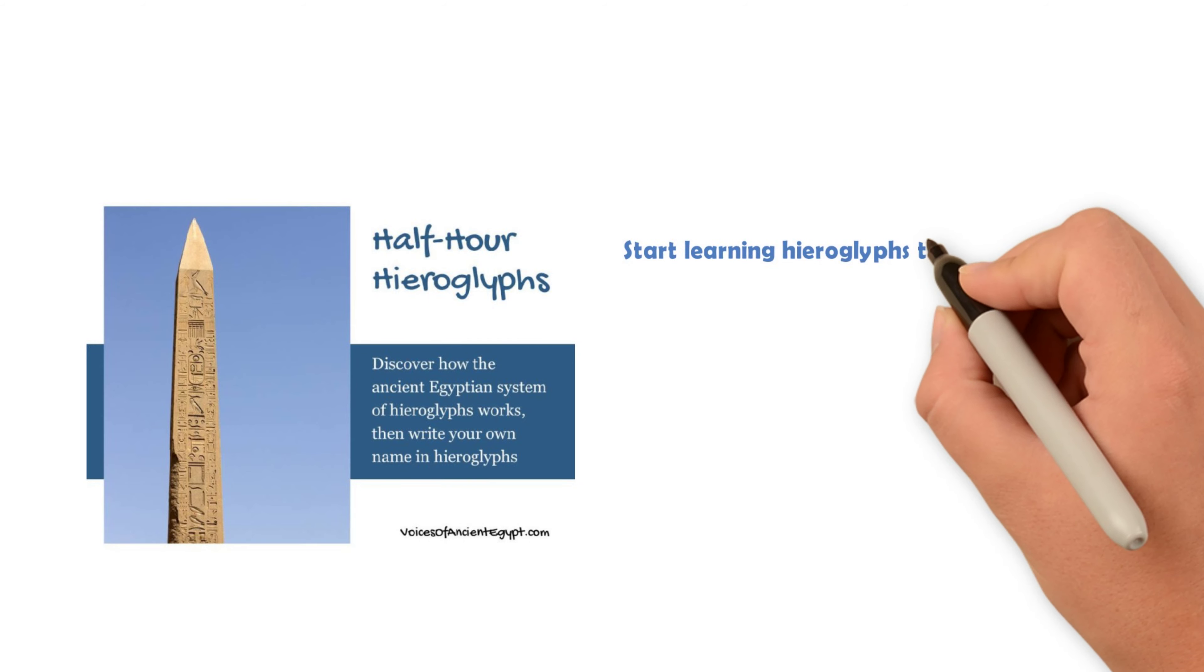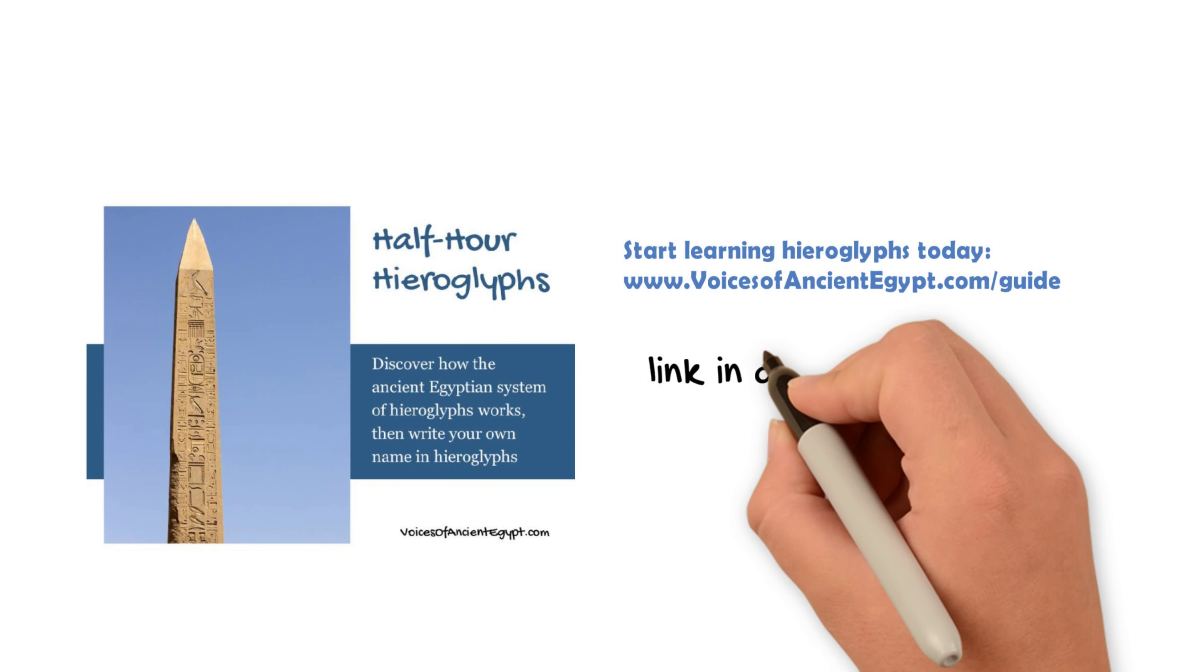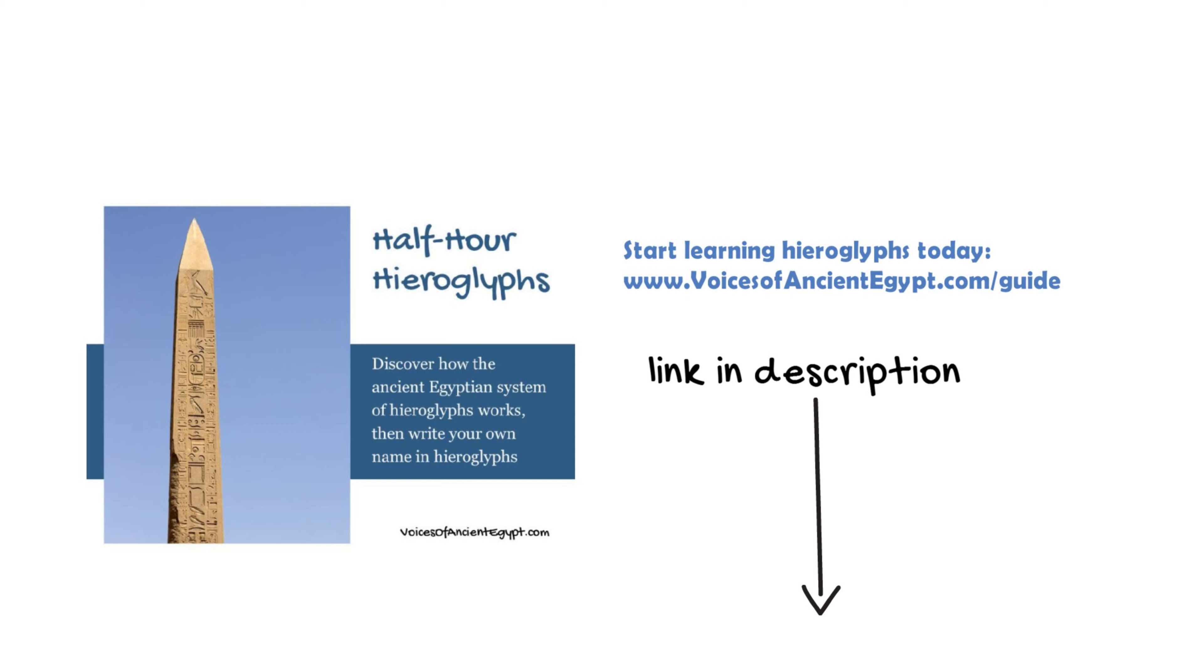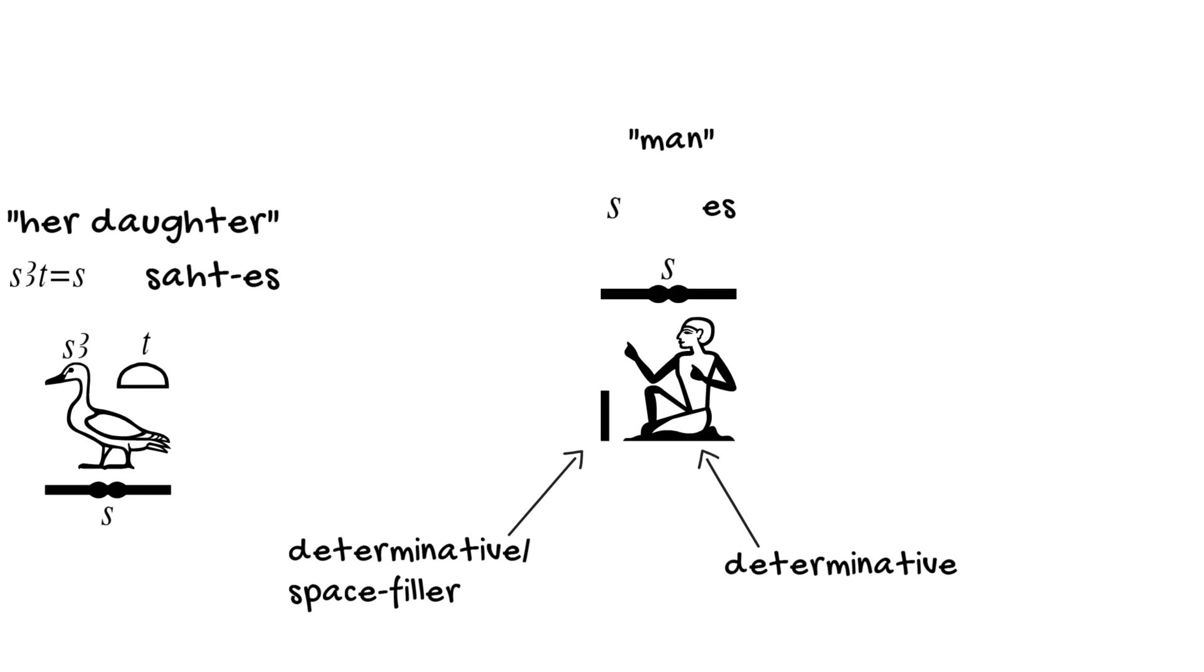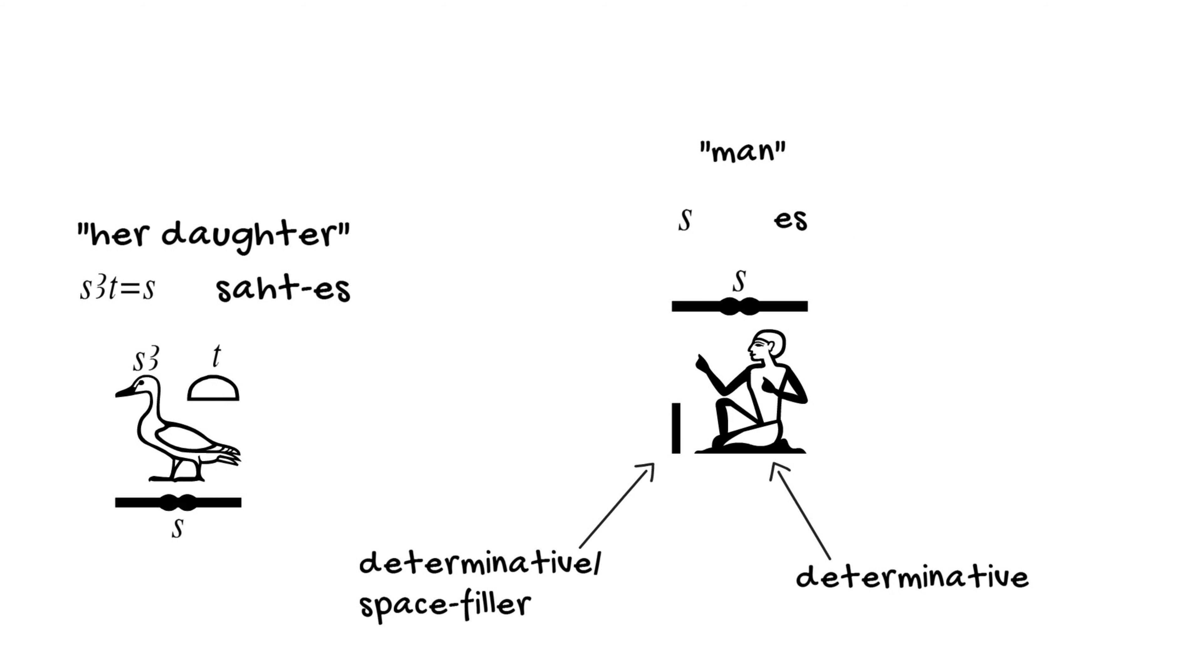and also if you're not familiar with determinatives, I do recommend downloading my free half-hour hieroglyphs guide. So in words like the word for man, they always use this door bolt. They don't interchange with the folded cloth.